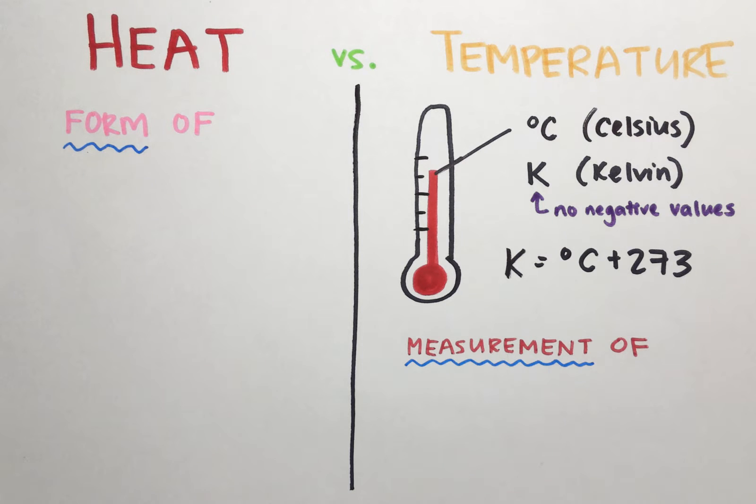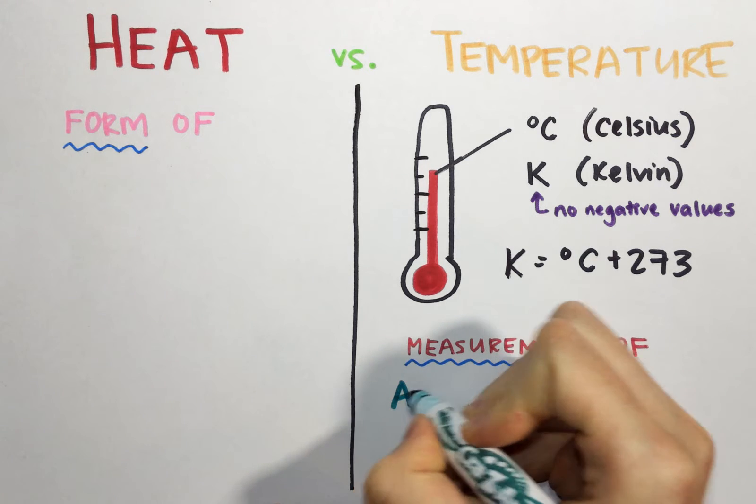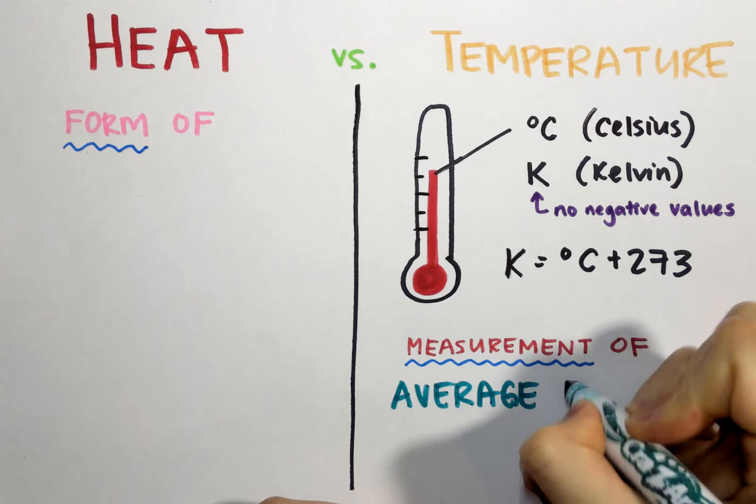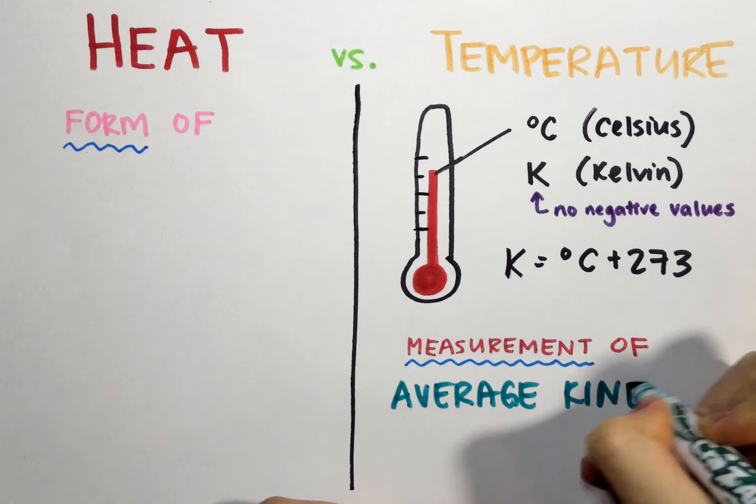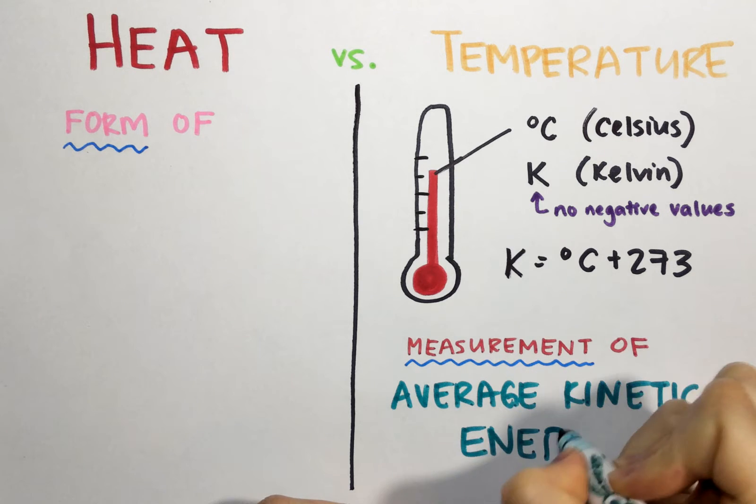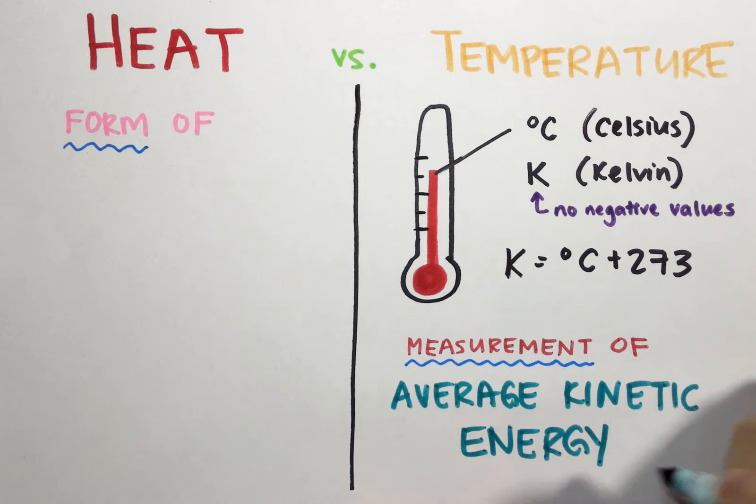So the way that we're always going to refer to this in chemistry is by saying that temperature is a measurement of a sample's average kinetic energy. And when we say that term, what we really mean is on average, since there are lots and lots of molecules in a sample, how fast is a particular molecule moving?